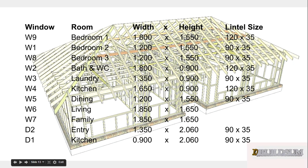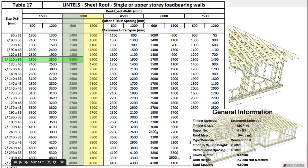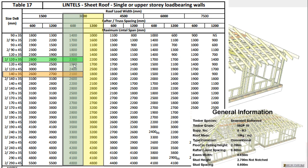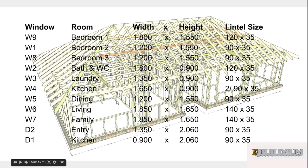Now for the 1850mm opening. Looking at the columns, two 120×35s would be available at 2200mm, but that may be overkill. A 120×45 is available, but I'm fairly sure a 140×35 will have a smaller cross-sectional size and be a more efficient member to use. So we're going to use a 140×35 for our 1850mm openings. That gives us all the lintels for our building.